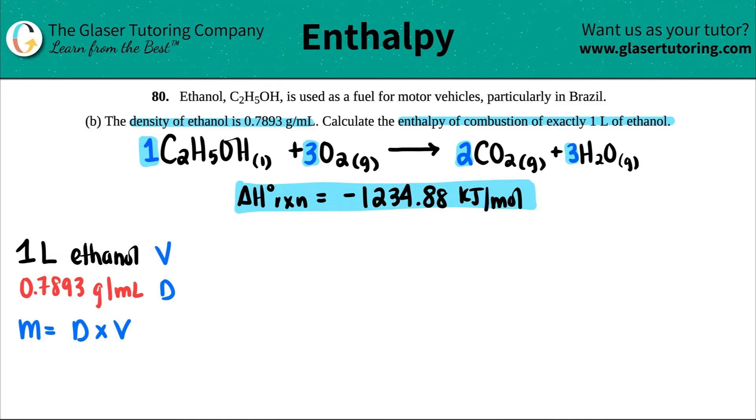But now just make sure that your volume units match. I was given liters, but my density is in mils. I got to convert one of them. It's easier for me to just convert the one liter. I know that one liter to milliliter, you multiply by a thousand. So this would be the same thing as a thousand mils.